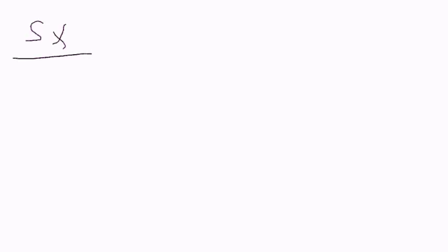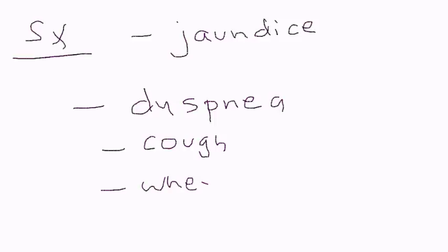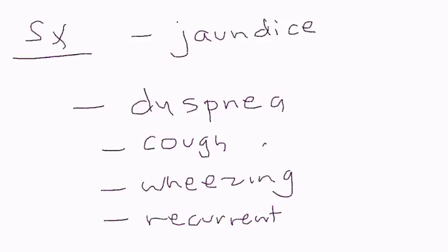Now let's talk about symptoms. The classic symptoms of alpha-1 antitrypsin deficiency are respiratory symptoms — difficulty breathing, cough, and wheezing. Recurrent pulmonary and respiratory infections are also part of the symptomatology. The lung damage can also present with jaundice from the liver component.